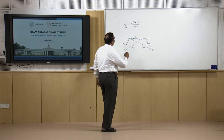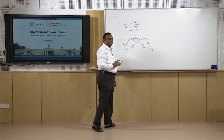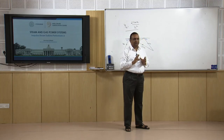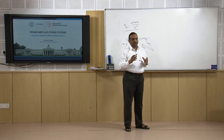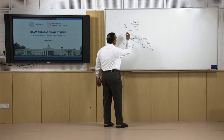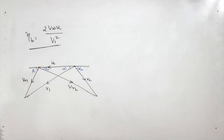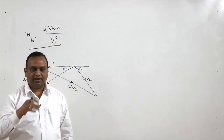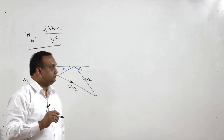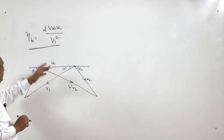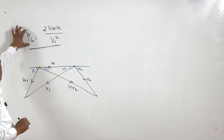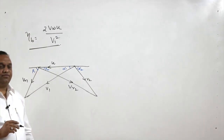This efficiency has to be maximized. Whenever equipment or a system is initially developed, we do not focus on efficiency — we focus on the output. Subsequently, our focus shifts to efficiency, because efficiency is a very important parameter for the performance evaluation of any equipment or component. So here the blade or diagram efficiency is expressed by this formula, and we will see under what conditions it is maximum.